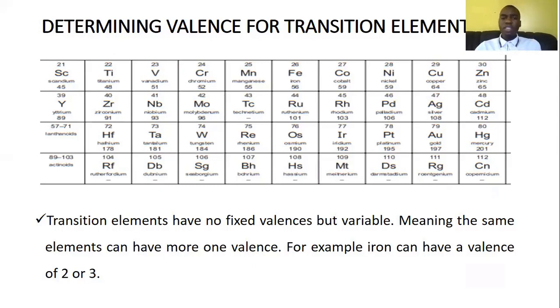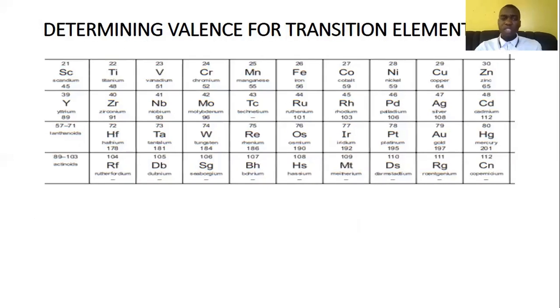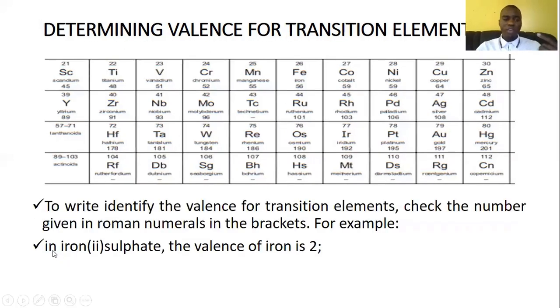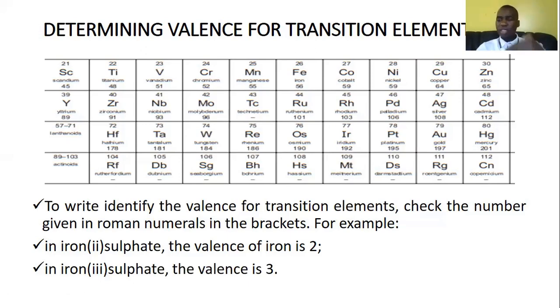Now, since these have got no definite way of determining the valence, they have different valences. How then do we know the valence? So how to know that valence is very simple. Just look at the way they've given you. For example, they will ask you, find the valence of iron in iron(II) sulfate. So when they put this number they've put here, the Roman numerals they put in brackets represents the valence for the transition metal. So here they've put two. It means that iron has got a valence of two. In this other example, as you can see, they've put three. So it means that iron has got a valence of three. So that is the simple procedure which it follows.